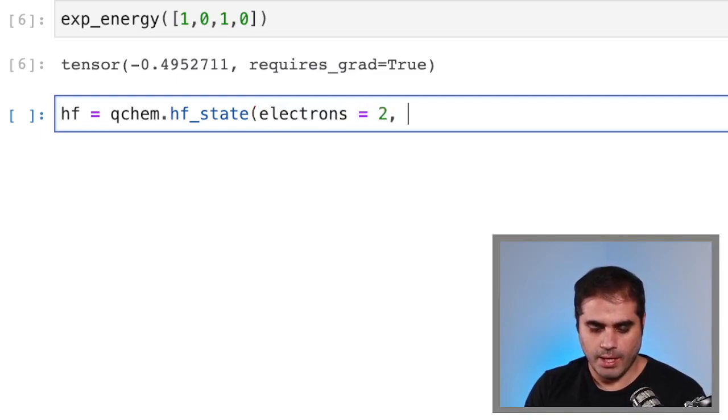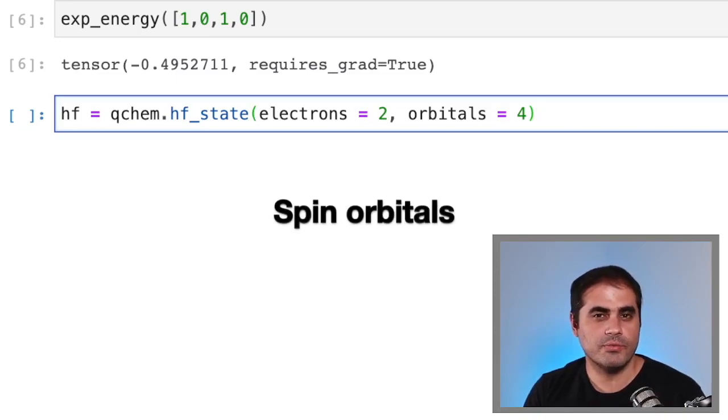PennyLane can calculate this state for us using qchem.hf_state. And then we have to specify the number of electrons. So for a neutral hydrogen atom, we need two electrons. And then the number of orbitals, which is four. So it's equal to the number of qubits, just because orbitals here means spin orbitals, which is different from molecular orbitals. There's just one spin orbital per possible electron that you could have.